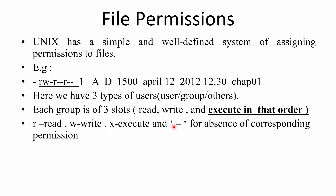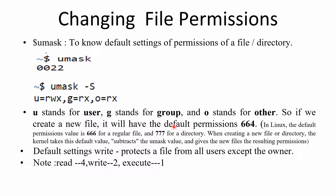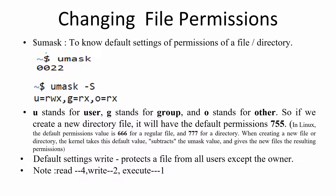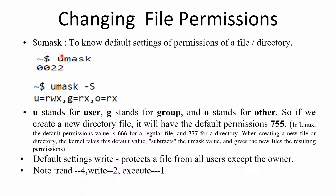We use a minus for absence of the corresponding permission. To know the default settings of permissions of a file or directory, the umask command can be used. When you type the umask command, this is going to be the output.